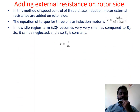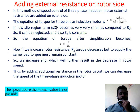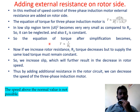Adding external resistance on the rotor side: external resistance can be added on the rotor side. In the low slip region, S²X2² is very small compared to R2 and can be neglected. With E2 constant, T is proportional to S/R2. If rotor resistance R2 increases, torque decreases. To supply the same load torque, slip must increase, which decreases rotor speed. Thus, by adding resistance in the rotor circuit, speed can be controlled below the normal speed only.